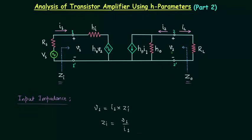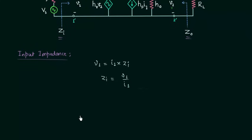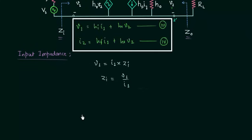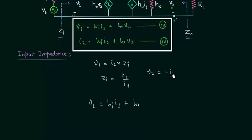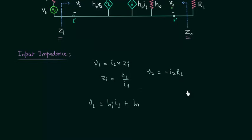Now I will use the h parameter equations. From equation number 3 we have V1 equal to Hi·I1 plus Hr·V2, and in place of V2 we can write minus I2·RL. So we have minus I2·RL in place of V2.